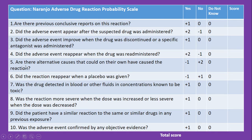The fifth question is: are there alternative causes that could on their own have caused the reaction? If yes, it is minus 1; if no, it is plus 2; and 0 for do not know. Question number six: did the reaction reappear when a placebo was given? If yes, it is minus 1; if no, it is plus 1; and 0 for do not know.